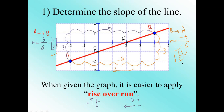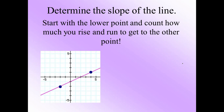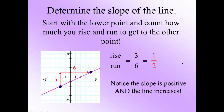Let's go to the next slide. The rise is three and the run is six, giving us a positive value of one over two. Looking at the graph, as we move from left to right the line is increasing. We can notice that when the slope is positive, the line increases.